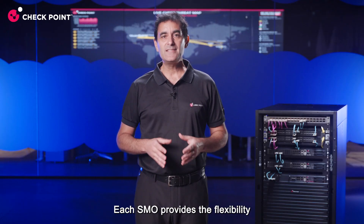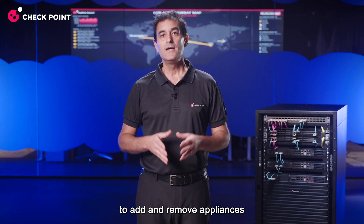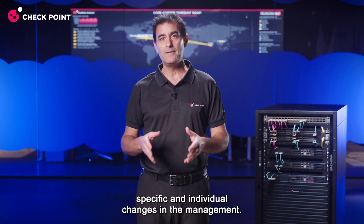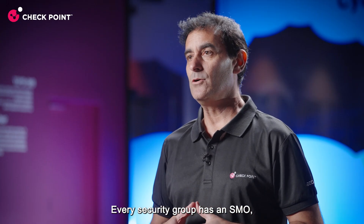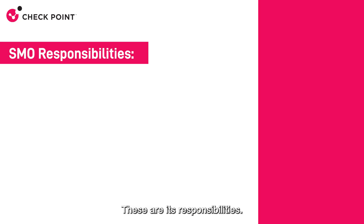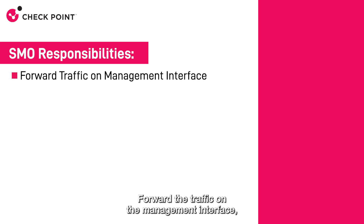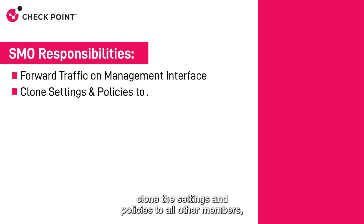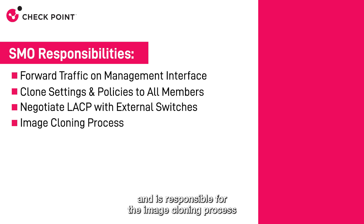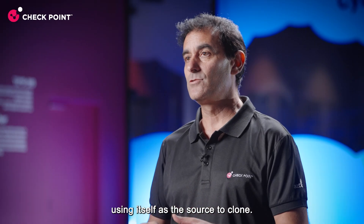Each SMO provides the flexibility to add and remove appliances according to business needs without requiring specific individual changes in the management. Every security group has an SMO, which is a physical appliance that manages the members in that specific group. Its responsibilities include forwarding traffic on the management interface, cloning settings and policies to all other members, negotiating link aggregation control protocol with external switches, and managing the image cloning process when the security group is initiated and expanded, using itself as the source to clone.